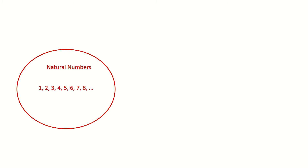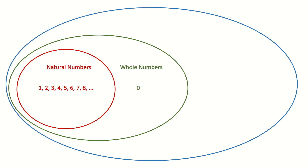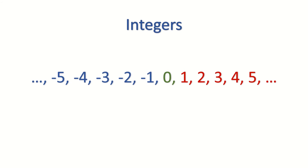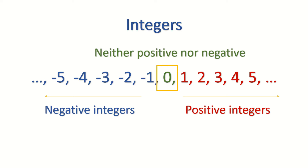Let's recap and look at the integers again. All the red numbers, or the natural numbers going to the right, are called the positive integers. All the blue numbers, or the negative whole numbers, are called the negative integers. And 0 is neither positive nor negative.